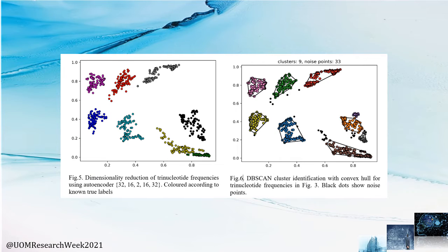What you see here is the dimensionality reduction of trinucleotide frequencies using our autoencoders. On the left-hand side, data points are colored using ground truth labels, and on the right-hand side, the same diagram is colored using DBSCAN clusters. Convex hull is used to draw boundaries for clarity. Notably, the yellow cluster (Clostridium phytofermentans) and the green cluster (Clostridium bijenki) belong to the same family, but in this case DBSCAN clustering was not able to identify them as two separate species.